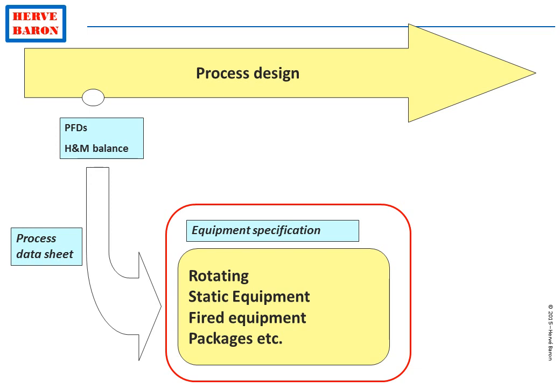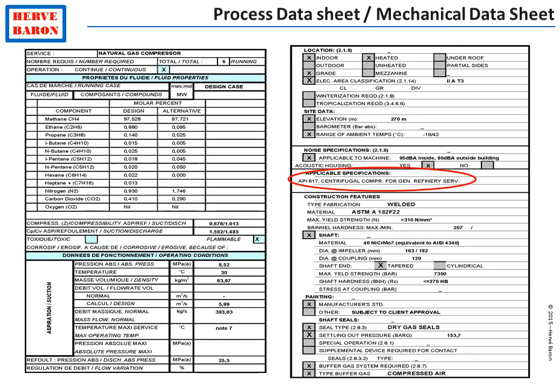To these requirements must be added information specific to the site environment, as well as specifications to ensure the high quality and dependable service of the equipment. This is done by issuing the mechanical data sheet. Compared to the process data sheet, which only contains functional requirements, the mechanical data sheet contains additional design and construction information, including the applicable design and construction code.